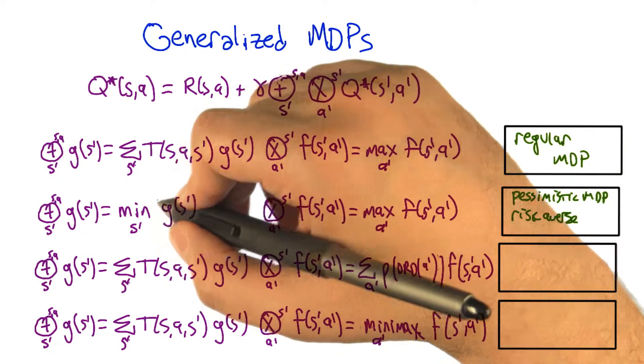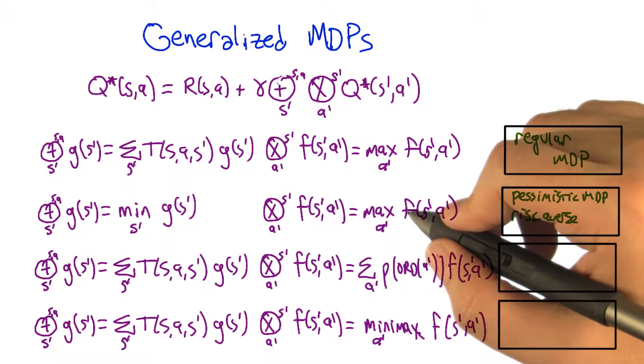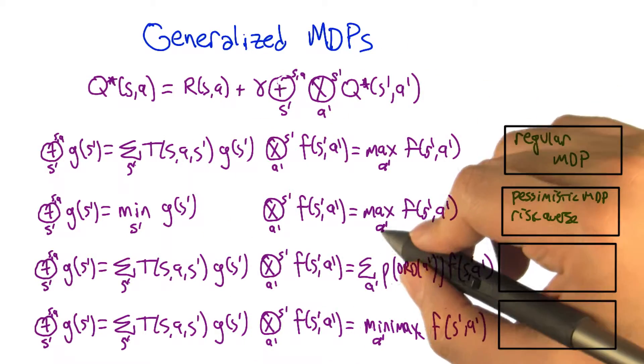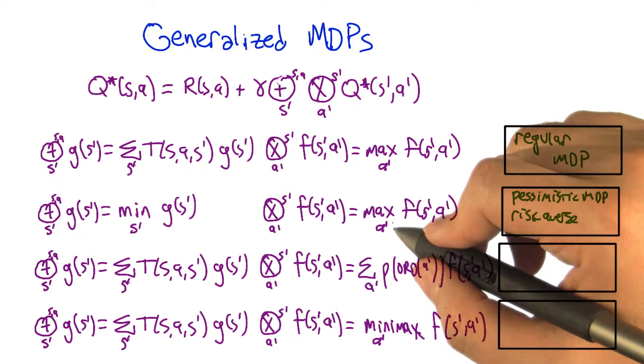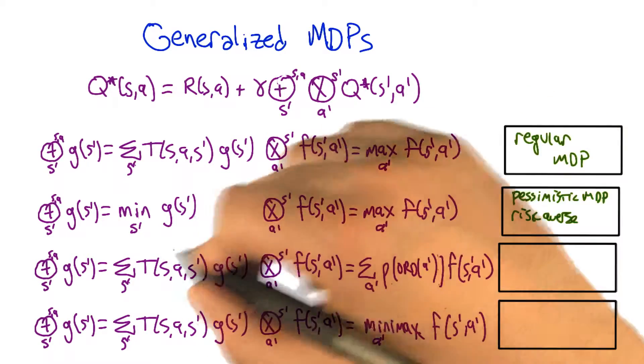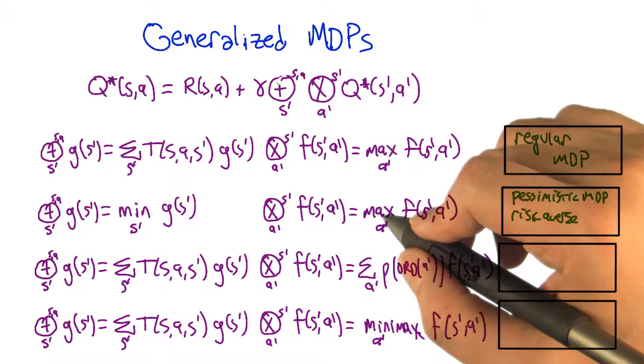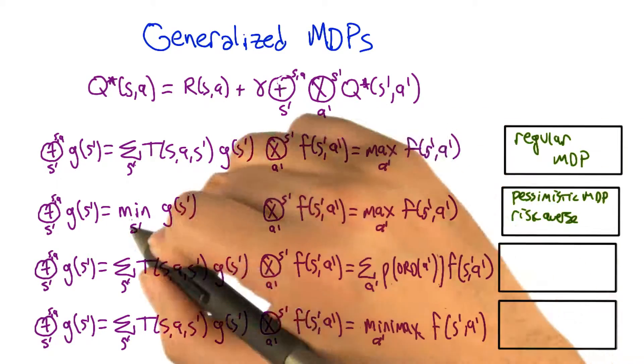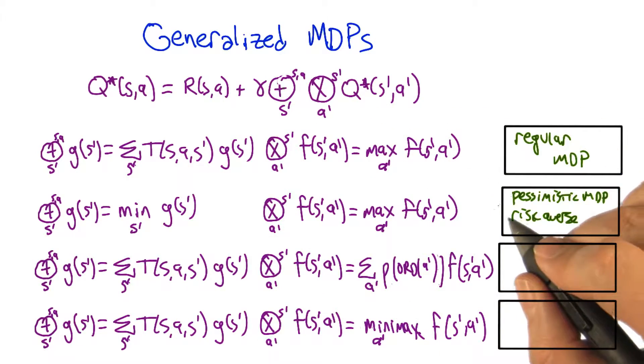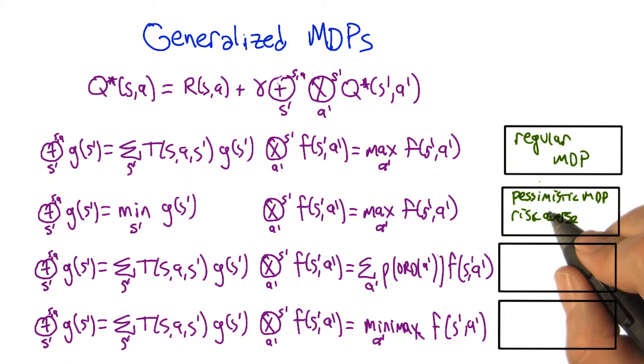All right, so we're going to be placed in a state that is worst for us, and once we get there, then we get to choose an action. We get to choose the action that's best for us. So it's almost also a kind of game, right? Where we get to make a move, and then the environment makes a move, and then we make a move, and then the environment makes a move. Okay, I like that. I like that.